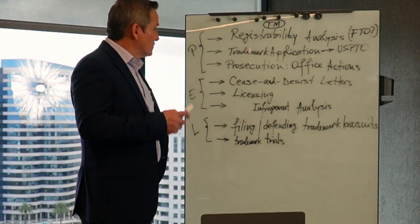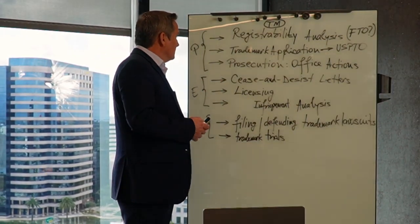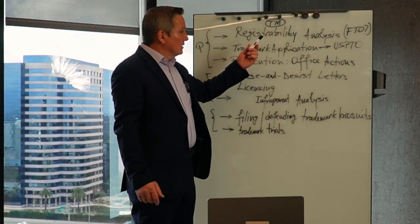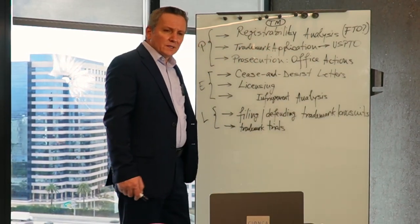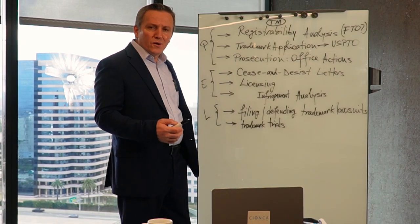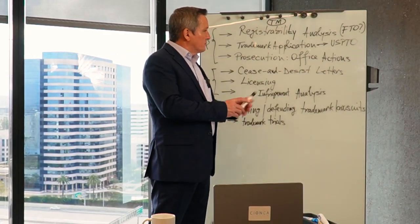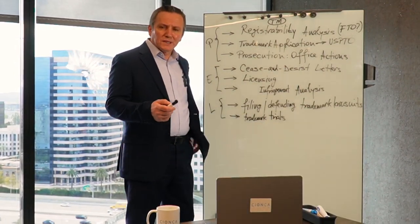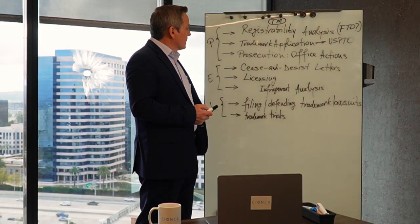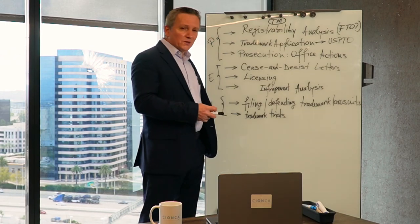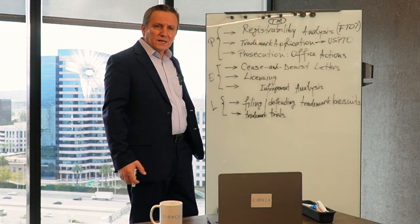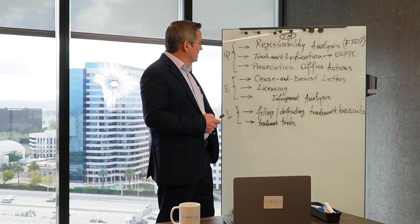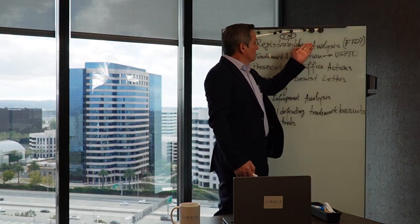In the prosecution section, the work often begins with a registrability analysis. The client wants to know whether or not the mark will be registered by the USPTO if an application is filed. A trademark search is conducted to see what similar trademarks may be out there in the USPTO database, and a registrability analysis is conducted so the client can be advised on whether the USPTO is likely to register that trademark.